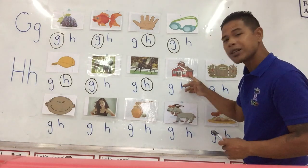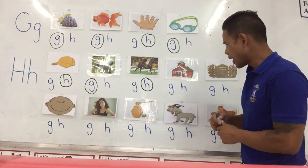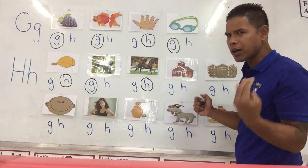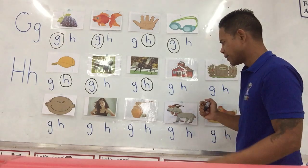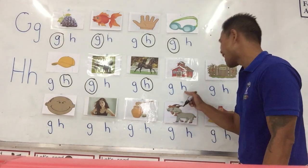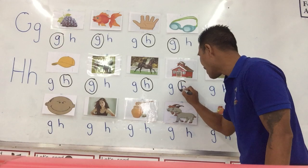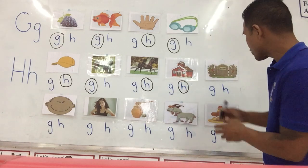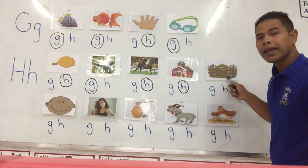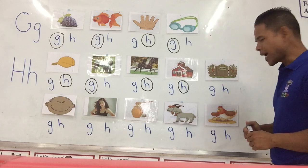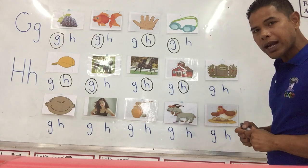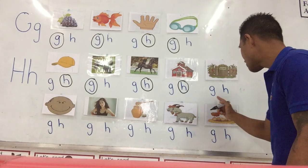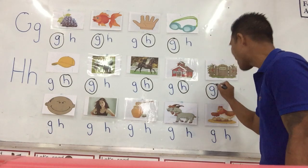Next one is house. House. Which one do you hear — do you hear the G or the H? Yes, it's the H. House. Next one — gate. Gate. Which sound do you hear? Excellent job. It's the G sound.